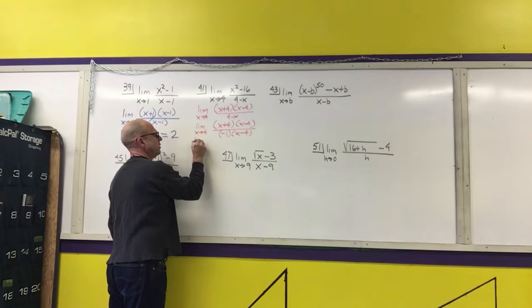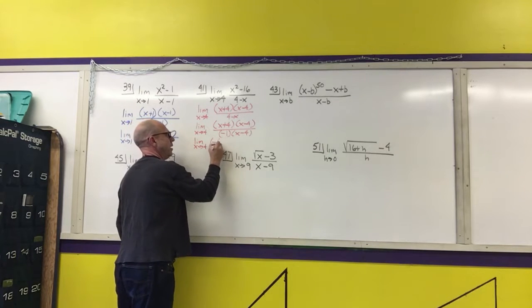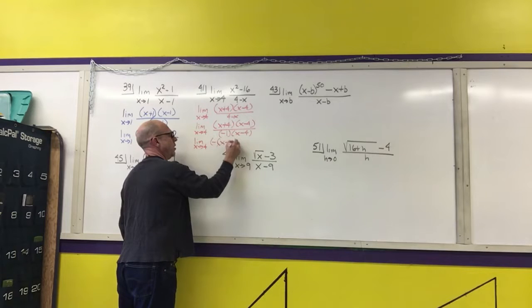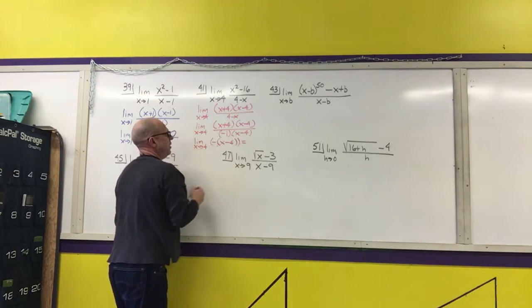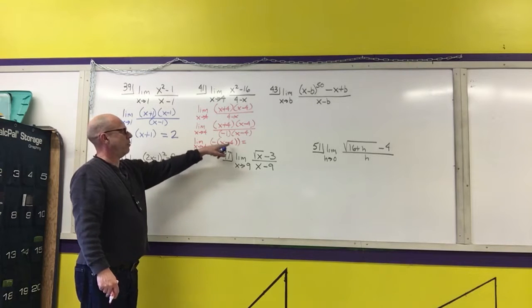So this gives me the limit as x approaches 4 of negative 1, or I can just put a negative there, of x plus 4. Now I can actually evaluate the limit. I get 4 plus 4.